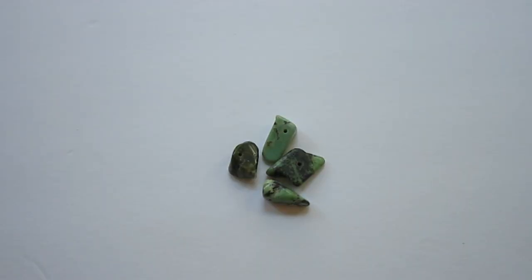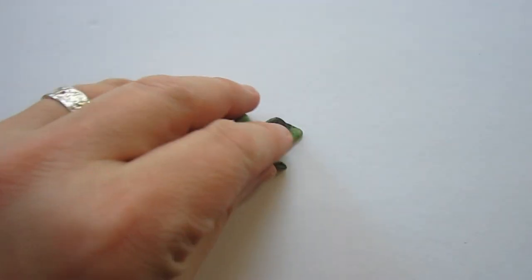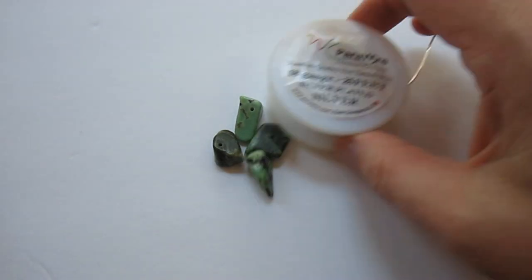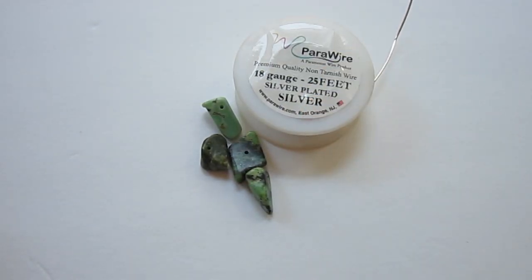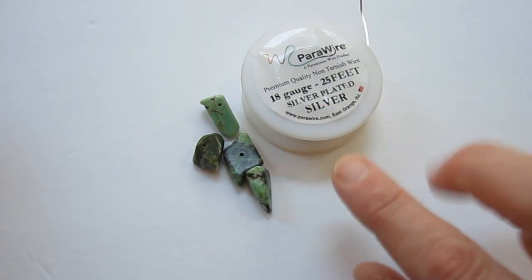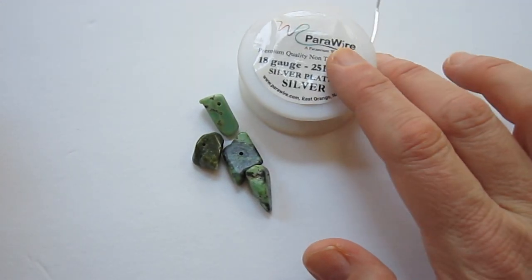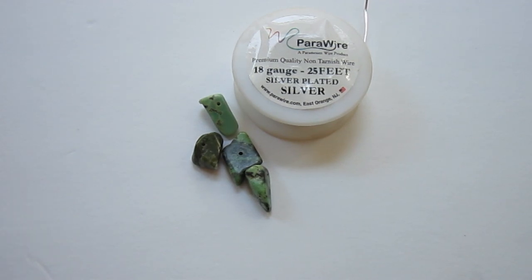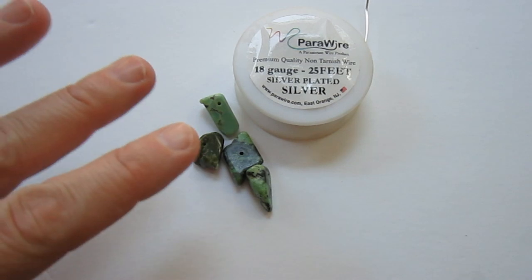Okay, so to make this cairn pendant I'm using these gemstone chips. I'm going to be using 18 gauge half hard round wire. I'm using para wire which I usually use. I'm using 18 gauge in this case since it's a little bit thicker. You want to kind of use the thickest wire that will fit through your beads.